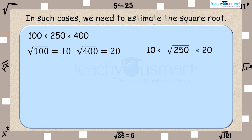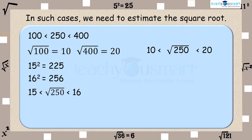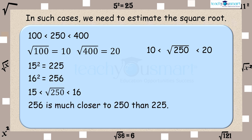But still we are not very close to the square number. We know that 15² = 225 and 16² = 256, so 15 < √250 < 16. Since 256 is much closer to 250 than 225 is.